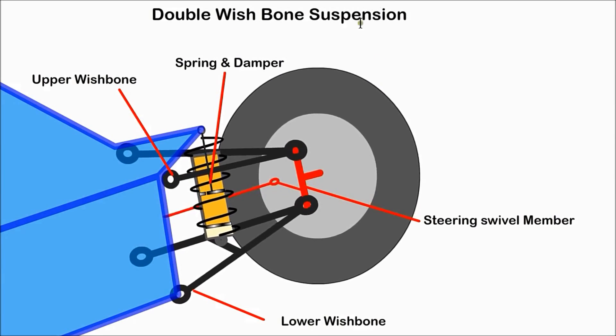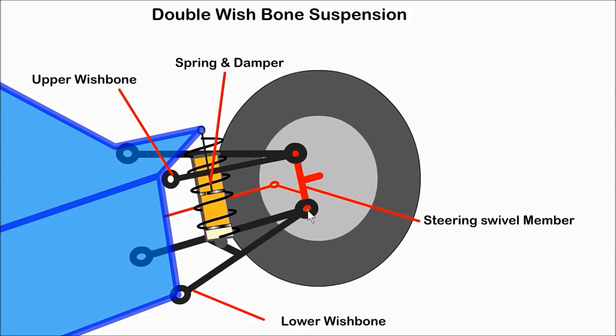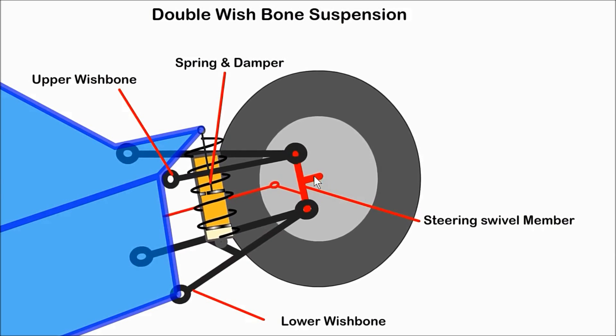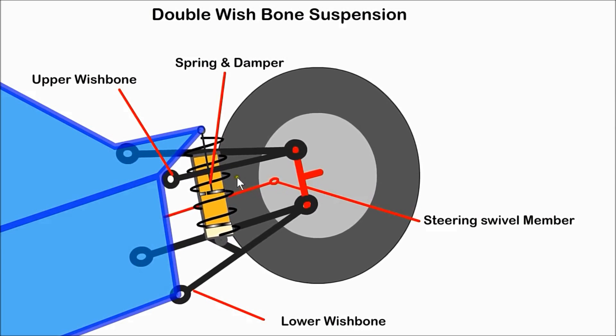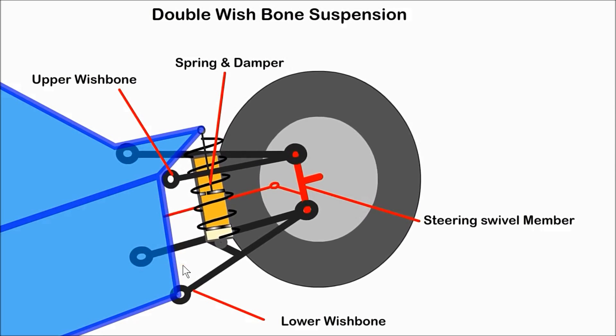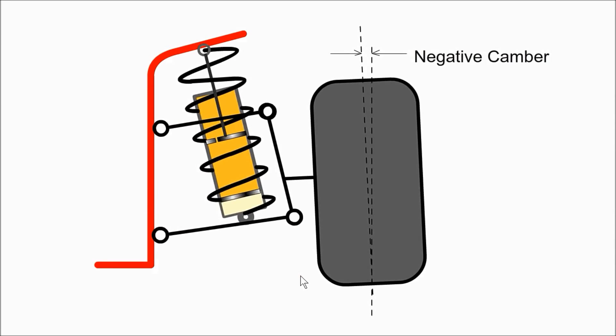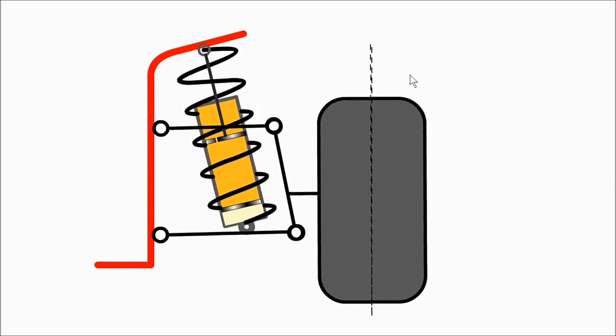A double wishbone suspension has two wishbone shaped links attached to the car at the wide end and the narrow end is connected to swivel members which have the stub axle and wheel. The spring and damper are located between the lower member and the car structure. In most cars, the wishbones are not of equal length or parallel. This system is expensive to manufacture but gives good stability to the wheel. They are often used on racing cars. The wishbones can be designed to alter the camber of the wheel as the suspension is deflected. Negative camber provides better stability as the car corners.